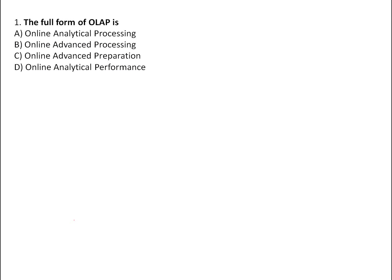The first question is very easy. The full form of OLAP is Online Analytical Processing. OLAP uses historical data — that is, time series data. There is another term known as OLTP, which stands for Online Transaction Processing.